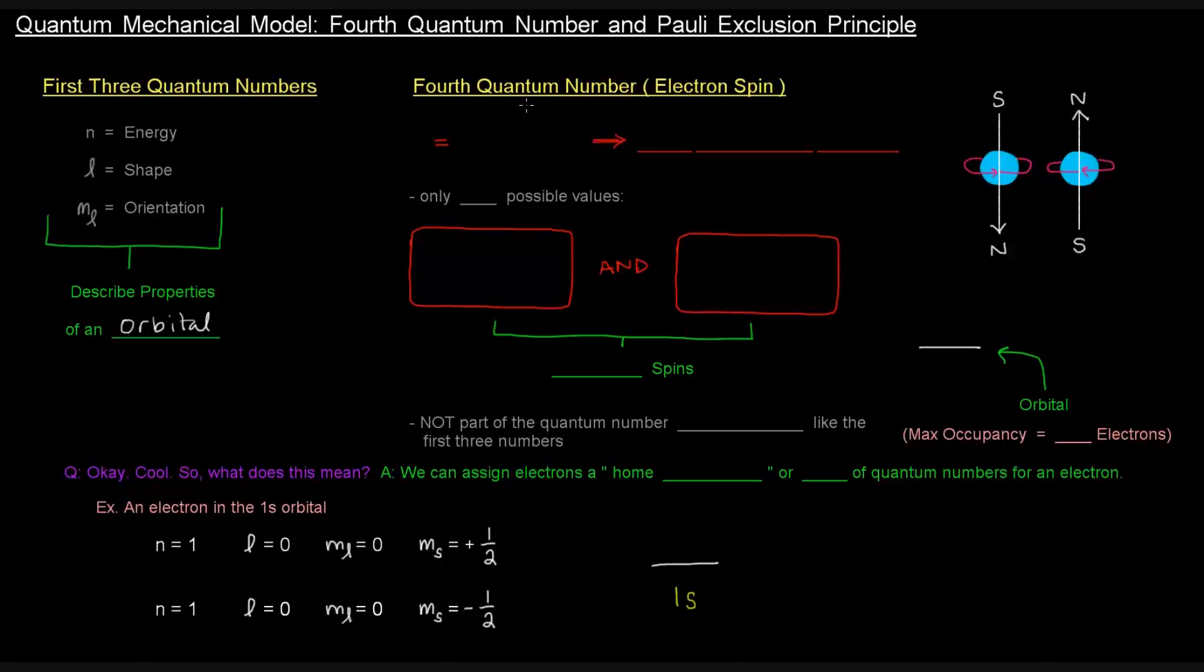The fourth quantum number is electron spin. So it's not a property of an orbital. It describes an actual electron. It's denoted as m sub s. That's what electron spin is denoted as. And basically the idea here is that these electrons create little tiny magnetic fields.